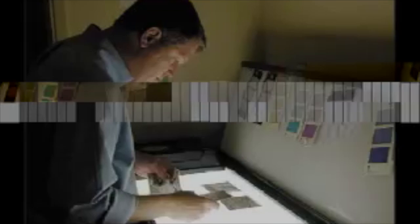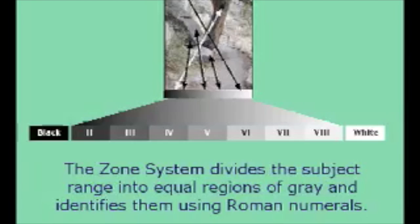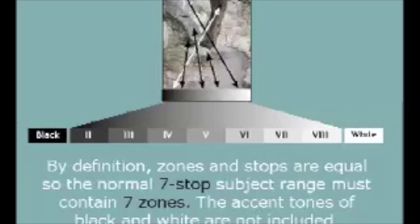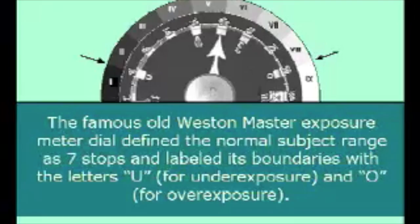Here's a brief review of these two approaches to efficient metering. The zone system divides the subject range into equal regions of gray and identifies them using Roman numerals. Black and white are accent tones. In the subject range by traditional definition, zones and stops are equal, so the normal seven-stop subject must contain seven zones, plus the accent tones of black and white.